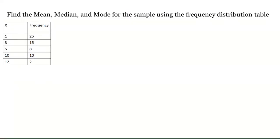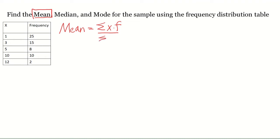Let's look at the next problem. This one says find the mean, median, and mode for the sample using the frequency distribution table. Let's begin by solving for the mean. To solve for the mean when we have a frequency table, we're going to take the sum of the x values times their frequency divided by the sum of the frequencies.